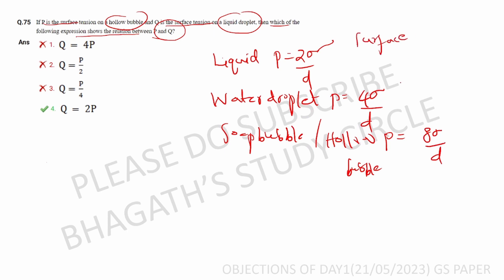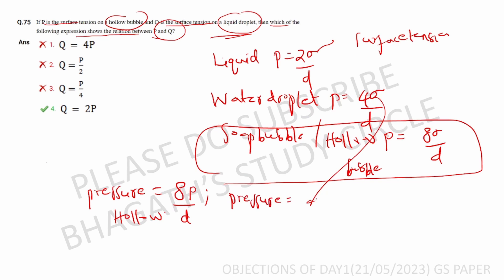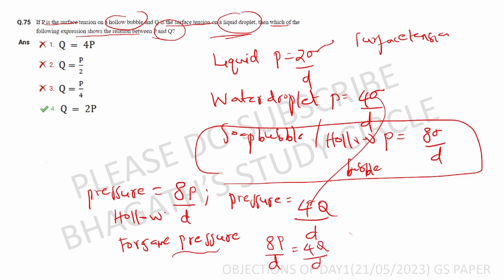So for the hollow bubble, pressure equals 8P by d where P is surface tension and d is diameter. For the liquid droplet, the formula gives pressure equals 4Q by d. Under the same pressure condition, comparing these two expressions gives the relationship between P and Q. The correct answer option is confirmed.